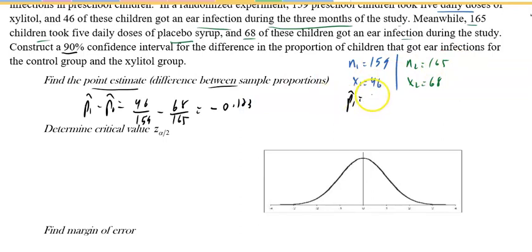If I work these out, p1-hat turns out to be 46 over 159, which is 0.289. p2-hat turns out to be 68 over 165, which is 0.412. So q1-hat is 0.711 and q2-hat is 0.588.